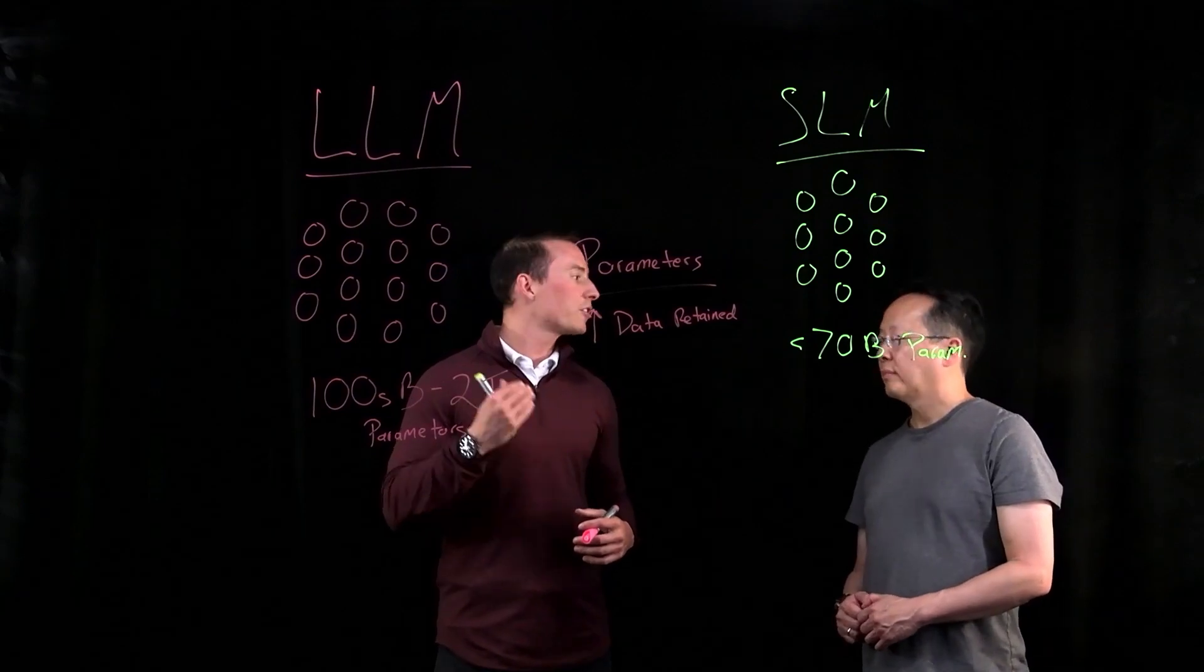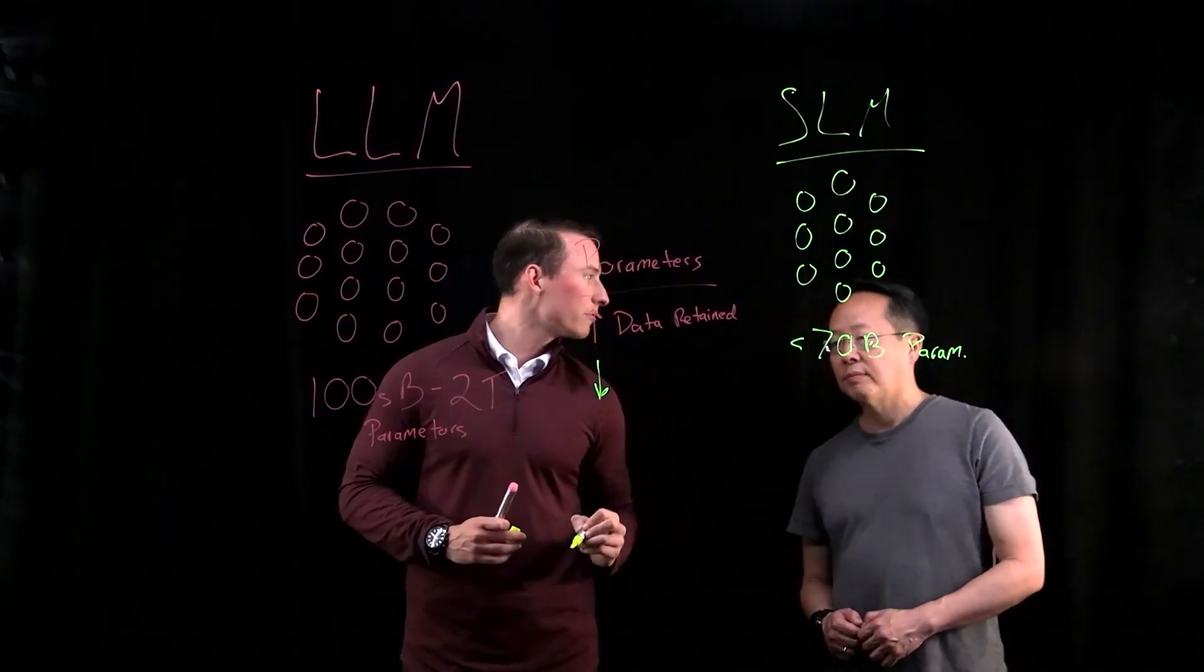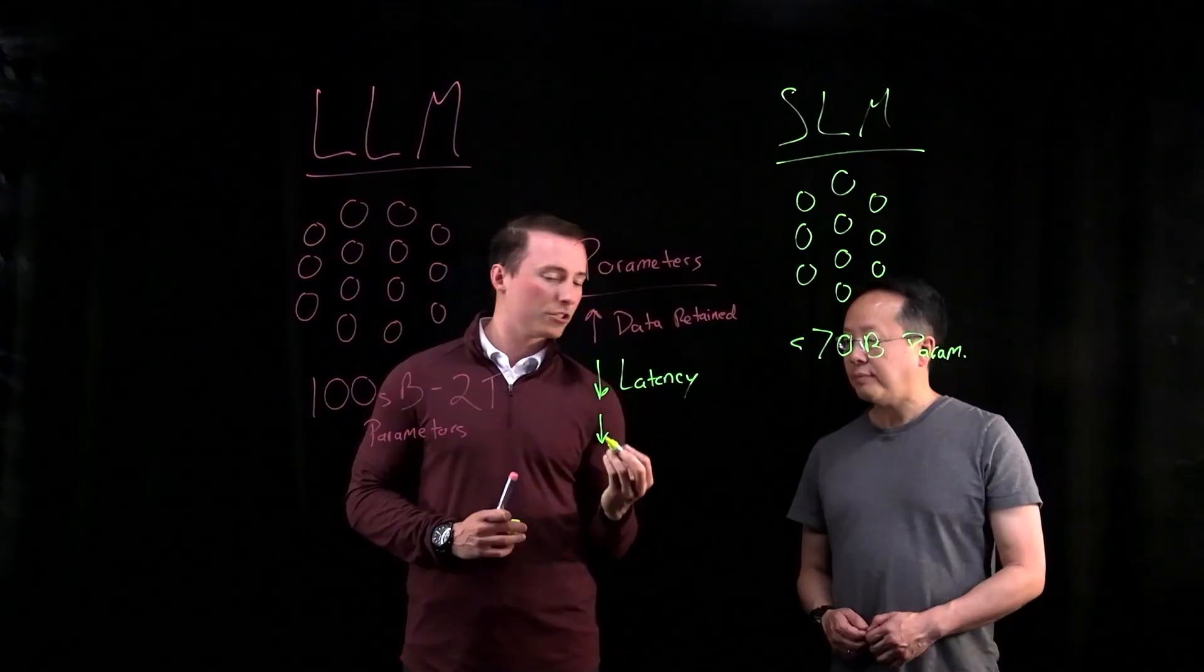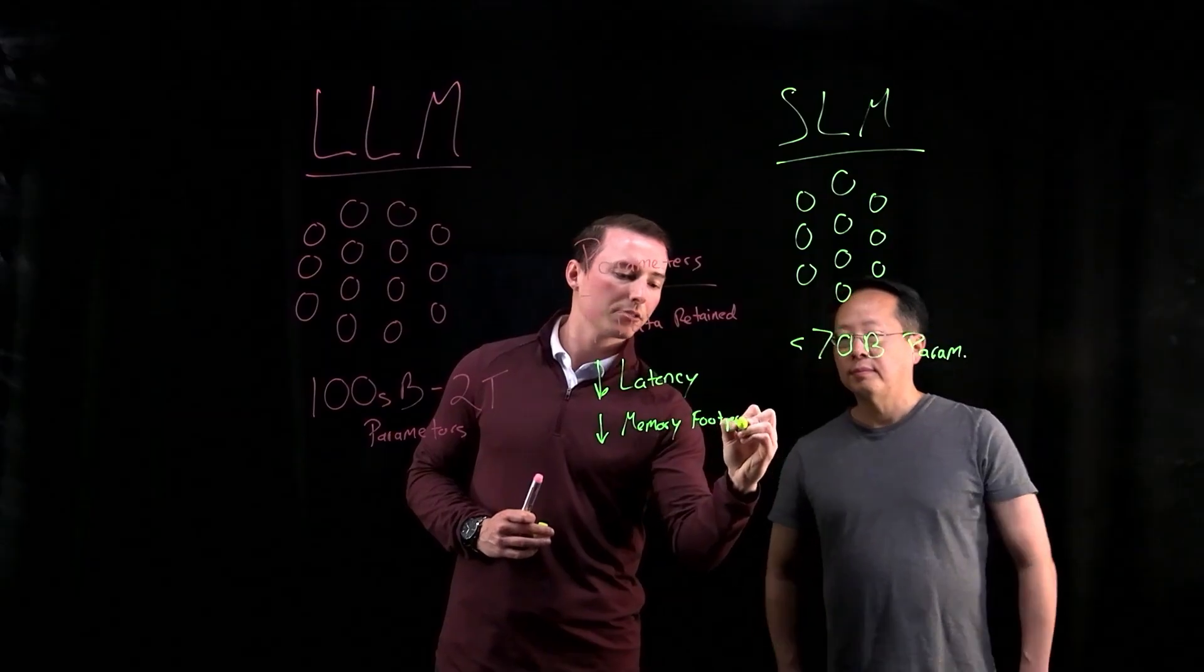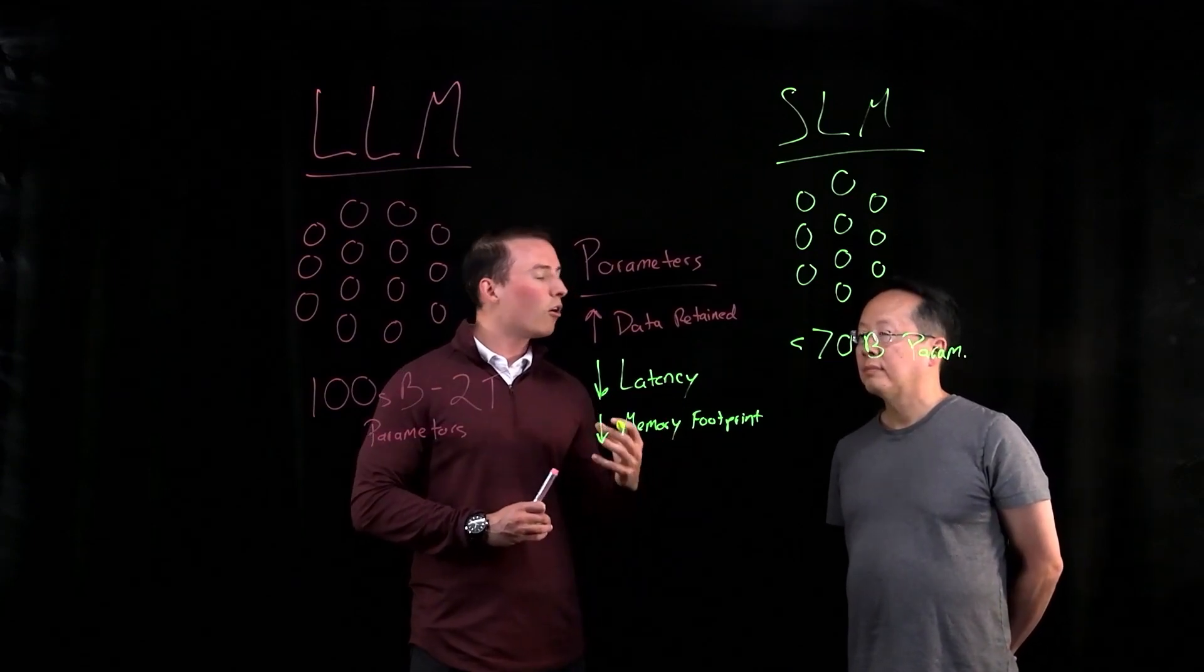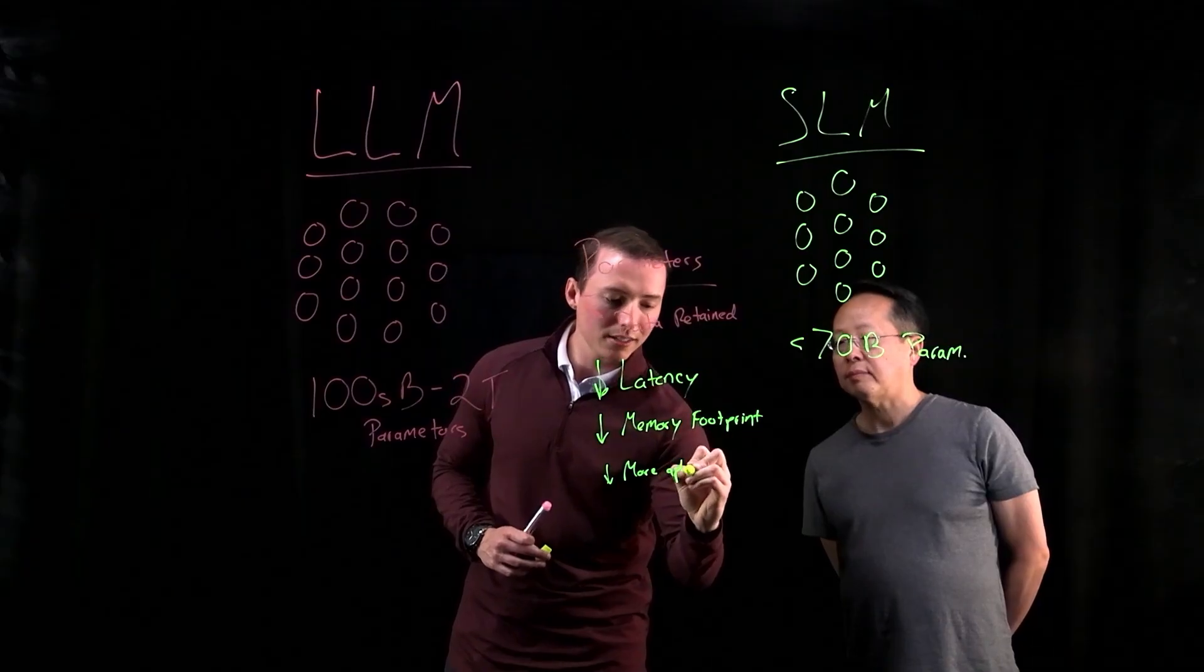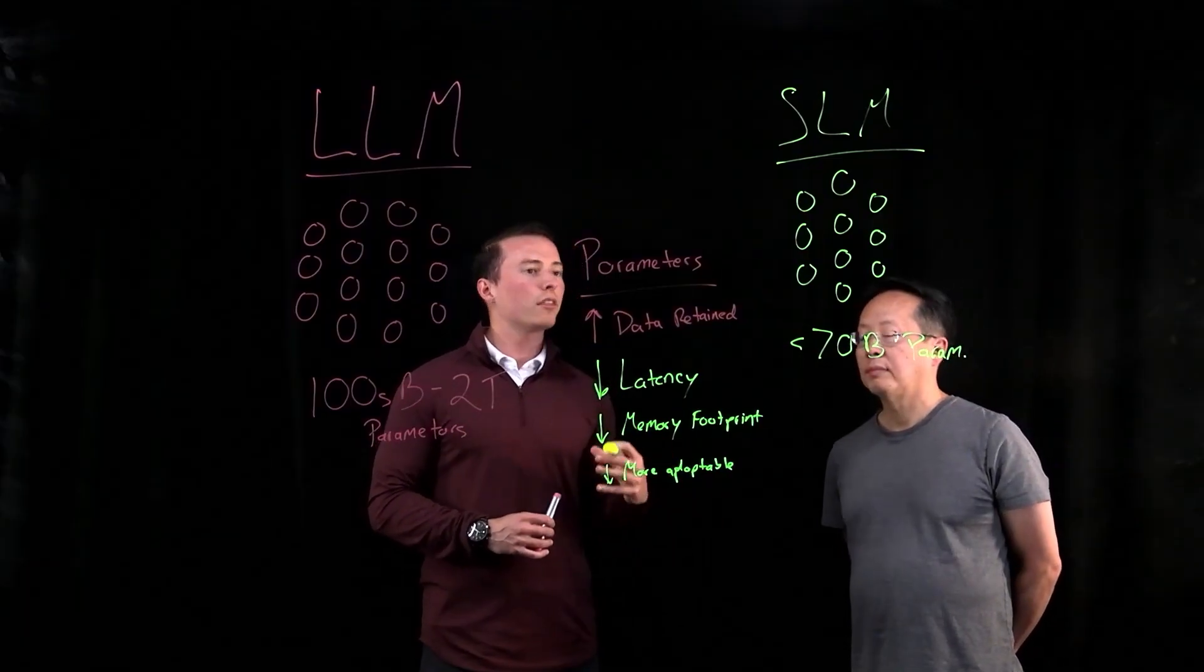There are trade-offs with larger parameters. It also means higher compute required to run them. If we're talking about a smaller number of parameters, that also means less latency when you run the models. This is because the fewer parameters you have, the less memory footprint the model requires. Another really important thing is that with smaller parameter counts, it also makes the models more easily adaptable, meaning it's easier to create domain-specific models with small language models.